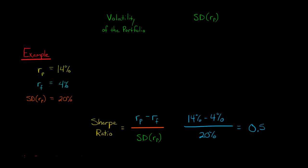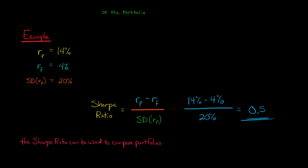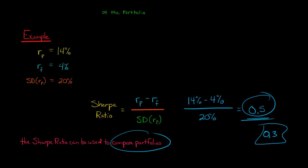We can use the Sharpe Ratio to rank different portfolios. If you have two portfolios and one has a higher Sharpe Ratio, you're getting more reward per unit of volatility from that portfolio. So if one portfolio has a Sharpe Ratio of 0.5 and another has 0.3, you're getting more reward per unit of risk from the first — more bang for your buck in terms of reward for the risk you're bearing. We can compare and rank portfolios.